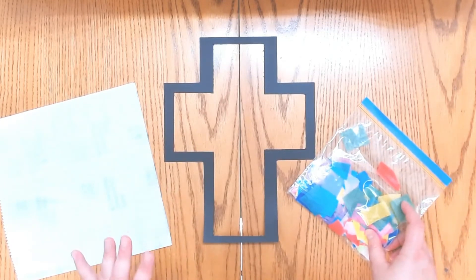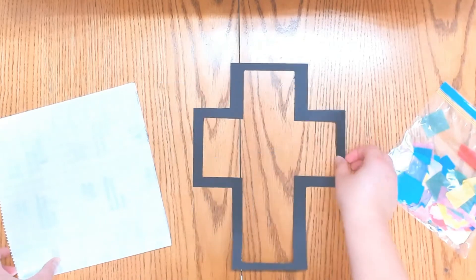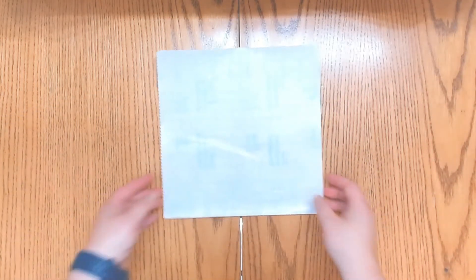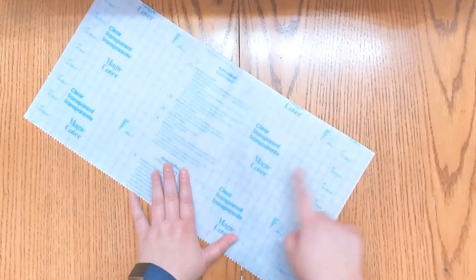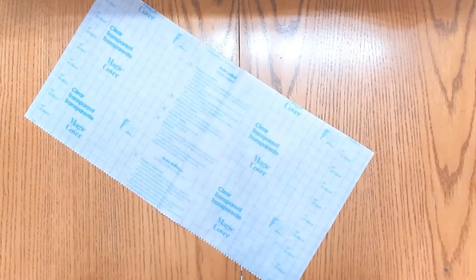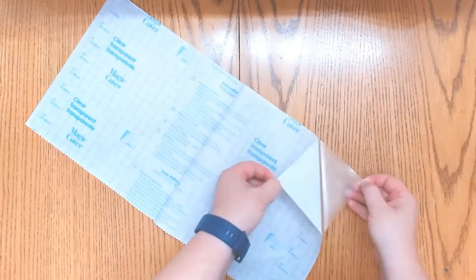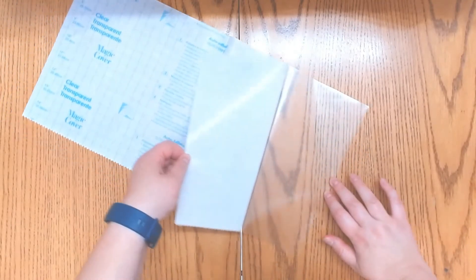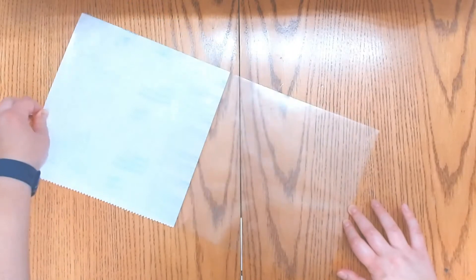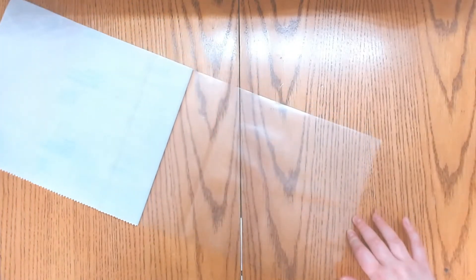So the first thing we're going to need to do is unfold the adhesive paper like so. And we're going to need to peel the backing off of the paper. You're going to want to take your time with it. Use one finger to kind of hold the adhesive down. Keep pulling like so.